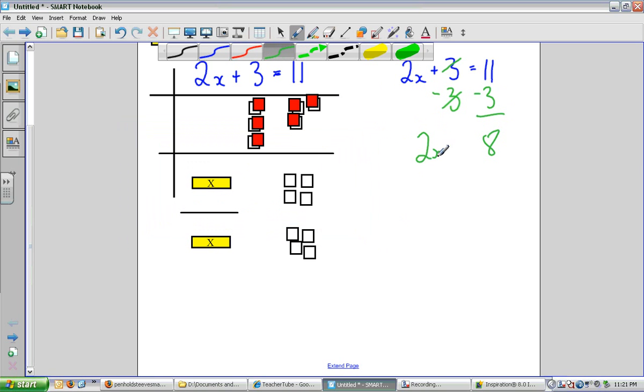And over here, it leaves me with the 2x. To get the x by itself, I would have to divide by 2 to get rid of that coefficient. So I divide by 2 to get rid of that coefficient. And x is equal to 4.